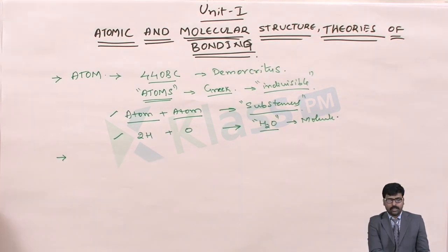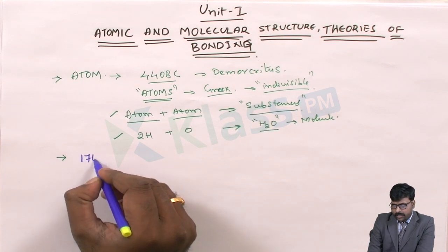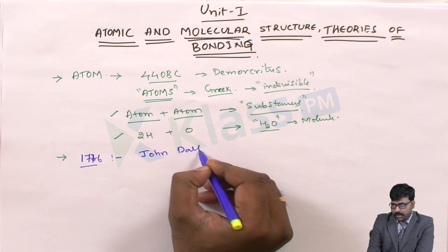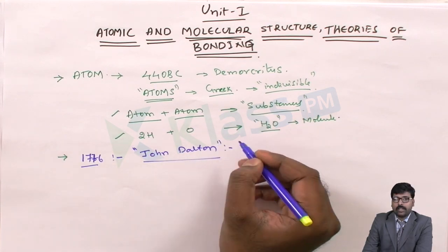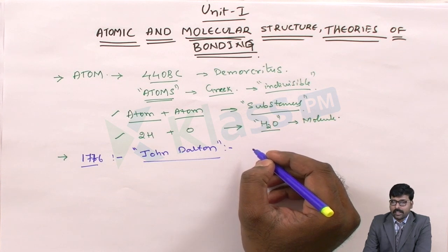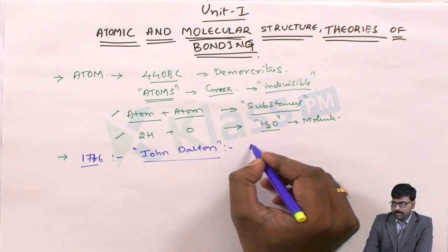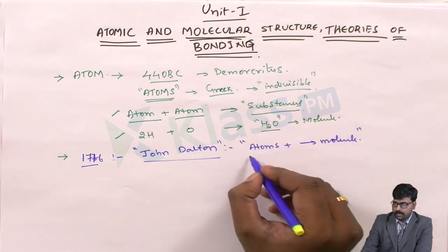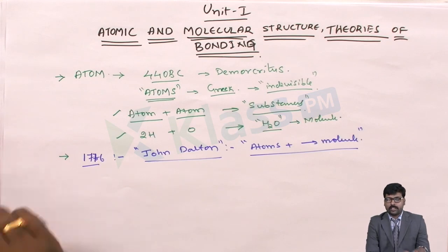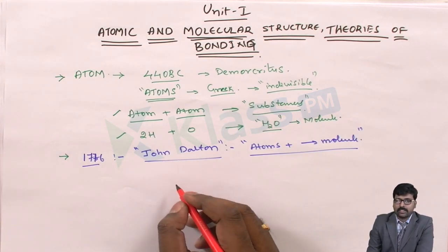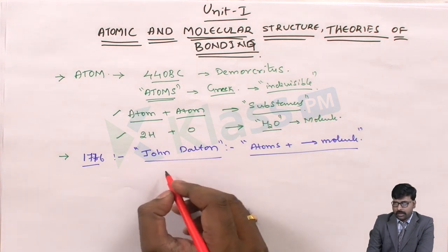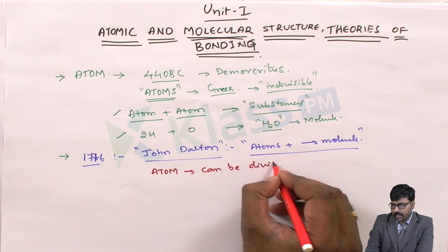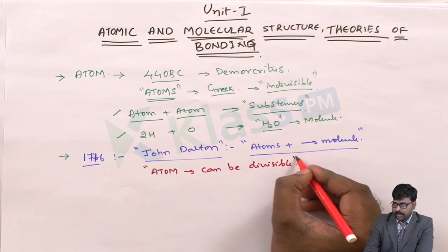Later on, in 1776, John Dalton started investigating what exactly Democritus had said. He started his experiment and agreed with the same thing — that atoms will combine in definite proportions to form a molecule. He conducted an experiment to prove what these substances are made up of, and he concluded that atoms can be divisible, or in other words, atoms have subatomic particles.